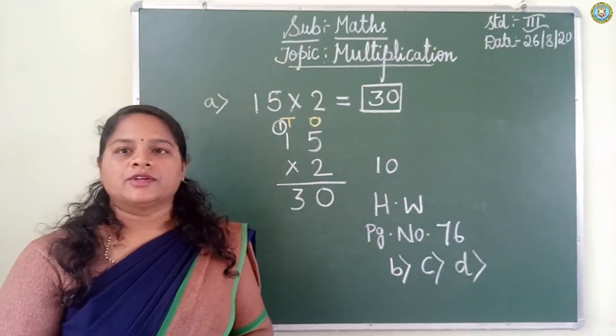Hope you have understood this multiplication class. Your homework will be page number 76, B, C, and D. You are going to complete the homework. Hope you understood this lesson. Thank you.